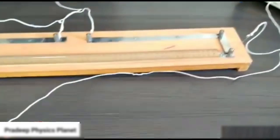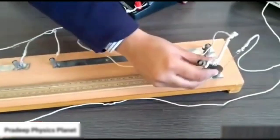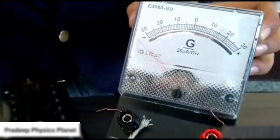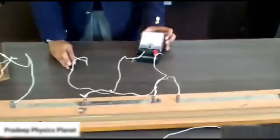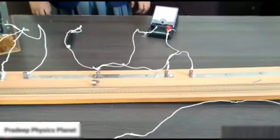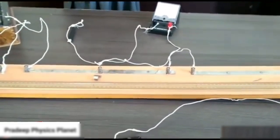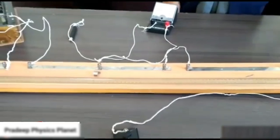Now we check whether we are getting the opposite deflection or not. If you put the jockey over one terminal, we get the deflection onto the right side, and if you press it onto the other terminal, we get it across the negative side. That means the connections are correct. I hope this is clear to you, how to make the connections of a meter bridge.